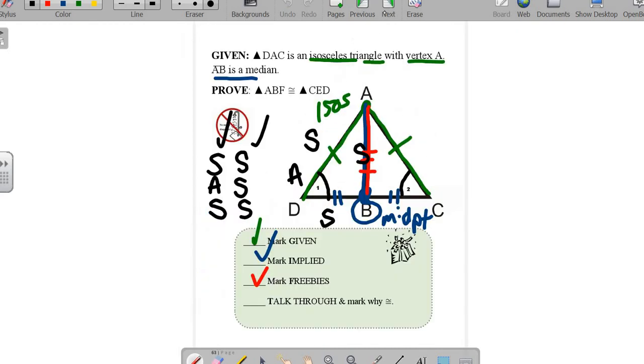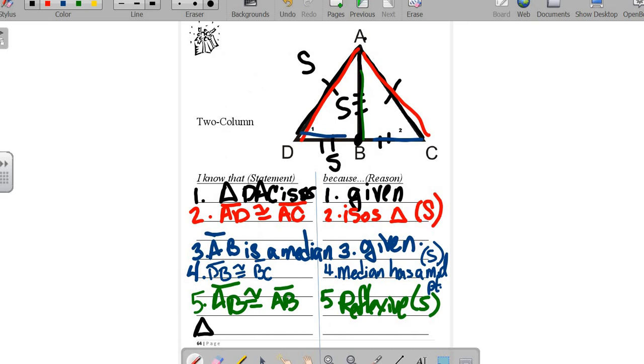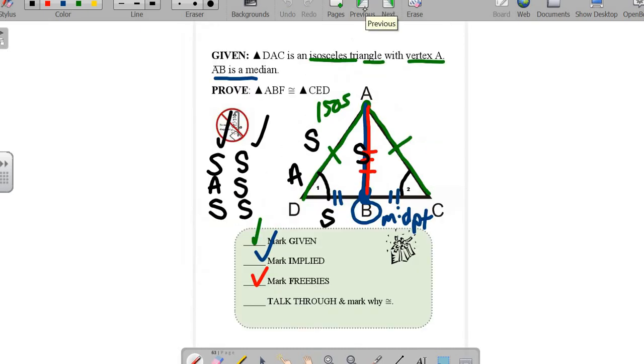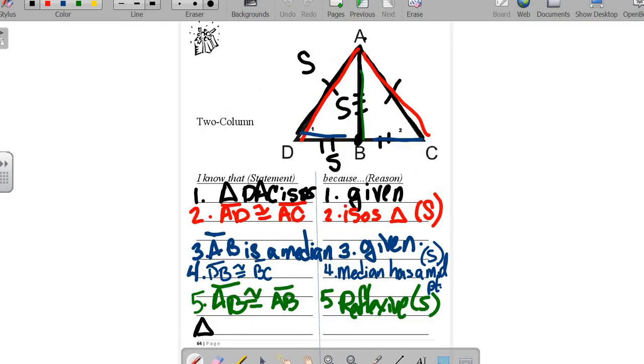So now I can finally conclude what we were trying to prove, which is that these triangles are equal. Triangle ABD is congruent to triangle ABC, and the reason is side-side-side.